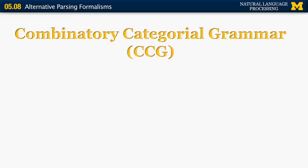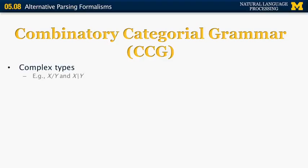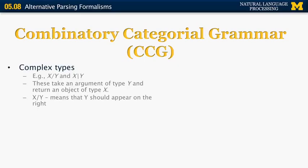The other category of grammars is CCG, combinatory categorial grammar, which is very popular for both parsing and generation. It involves the introduction of something called a complex type. A complex type is either X forward-slash Y or X backward-slash Y. These complex types take an argument of type Y and return an object of type X. The direction of the slash indicates whether Y should appear to the right or left of X.